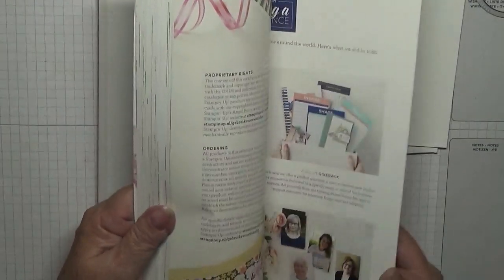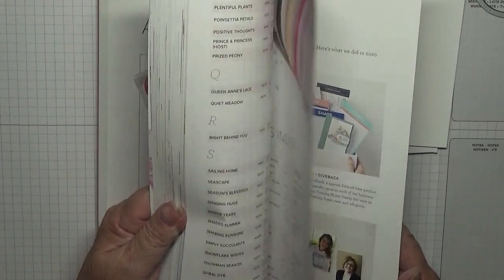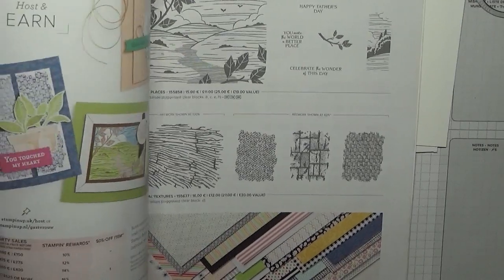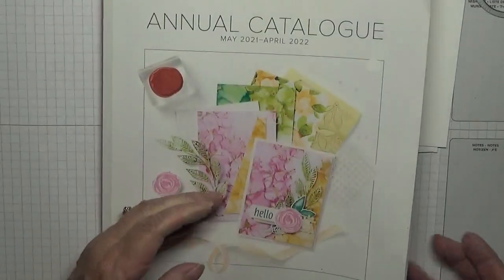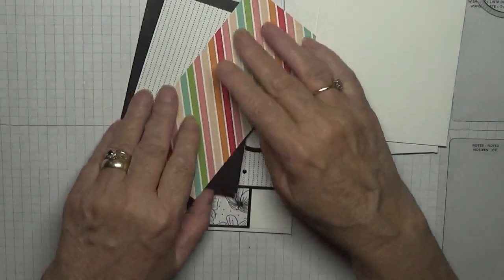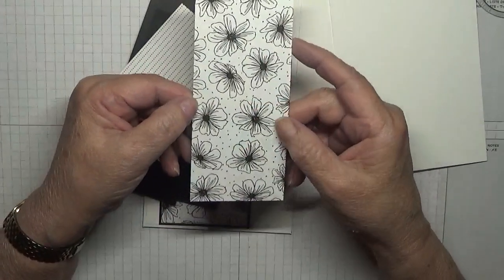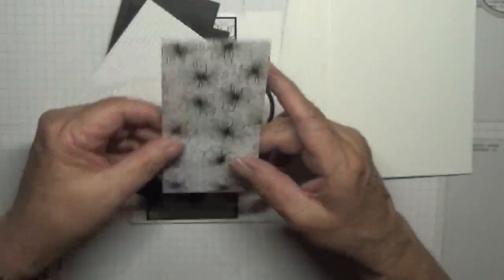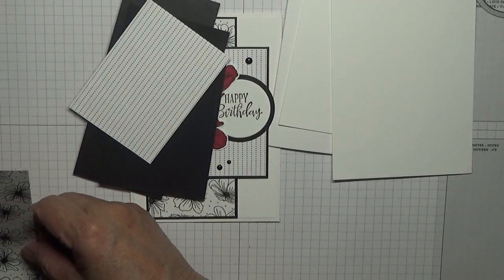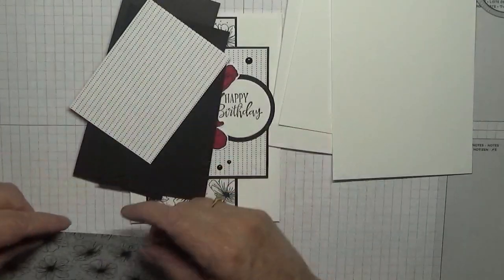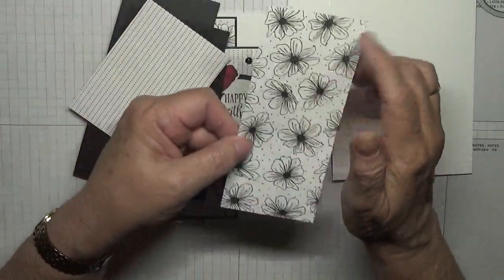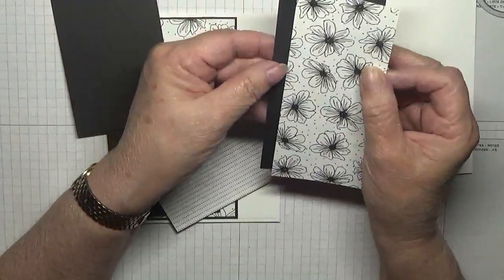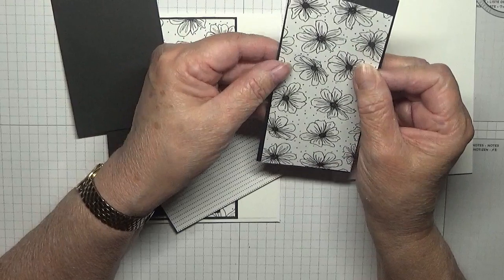This is the Pattern Party paper DSP which is a hostess gift. I've taken the flowered one with the flowers on, and this measures 2 and three-eighths by 5 and a half, and that will go with a piece of Basic Black that will measure 5 and five-eighths by 2 and a half.